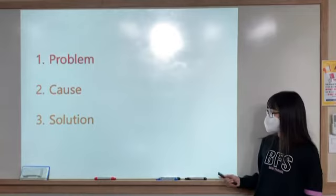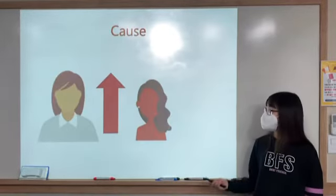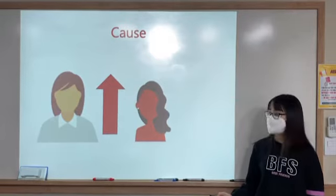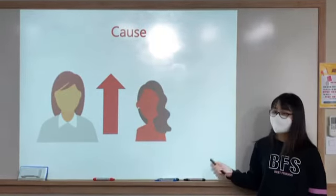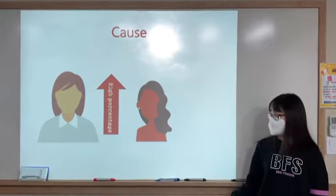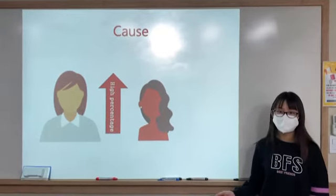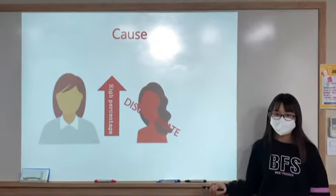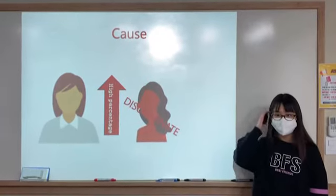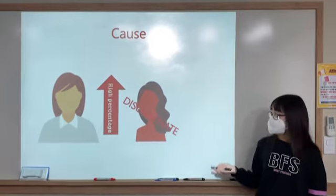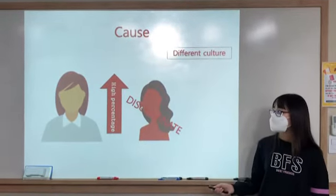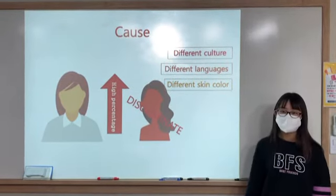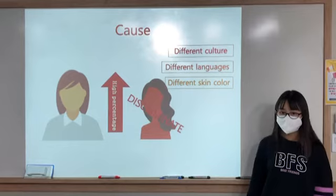Second, I will talk about the cause of racism. One of the causes is most white people have a high percentage of pride of their own race, so they discriminate other races. Another cause is being different cultures, languages, and skin color. People might think it's awkward compared to their country.